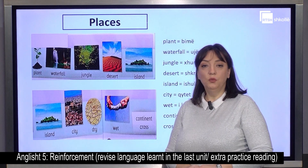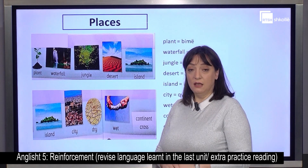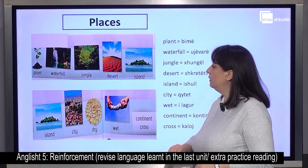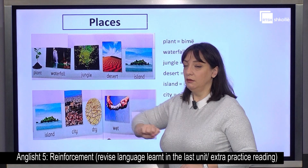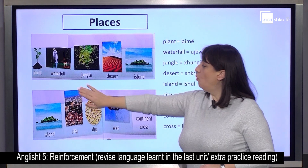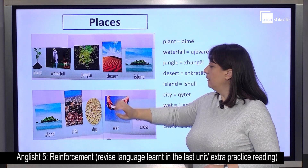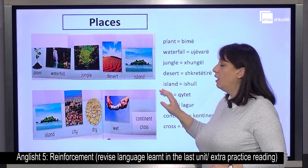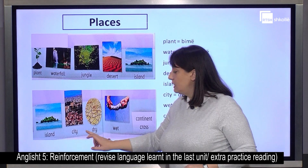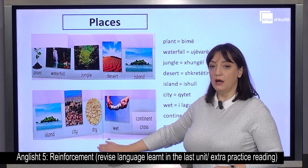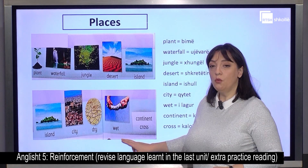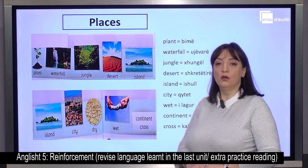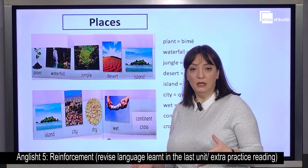Again, in the last unit we learned some places and some other vocabulary. Let's read again. Follow me — I read, you repeat. Plant, waterfall, jungle, desert, island, city, dry, wet, and two other words: continent and cross. Do you remember these words when we talked about places?